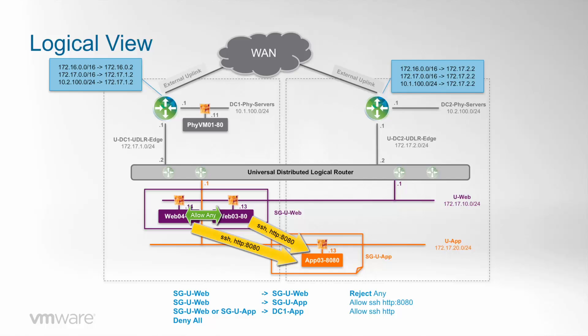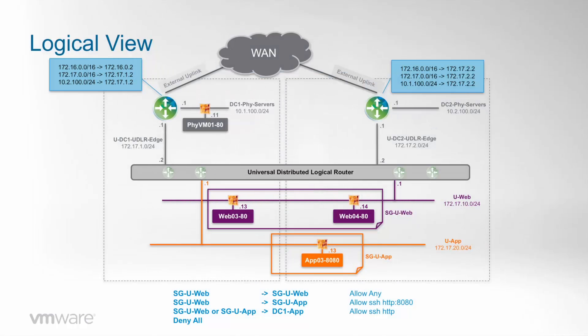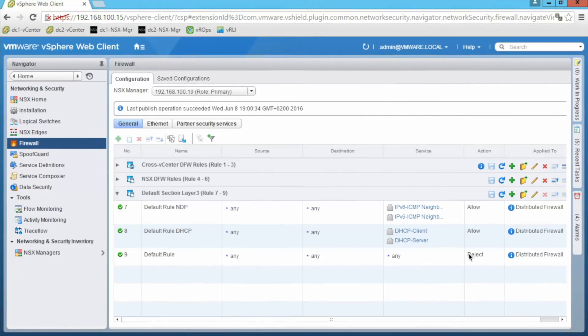We will see how policies are enforced during VM migration and also once the VM has definitely arrived at data center one. Let's go for it. We will start by reviewing that the policies we have defined are effectively being applied — that between web VMs we have any connectivity, and from web to app VMs we will only have SSH and HTTP on port 8080. Let's check the firewall rules.